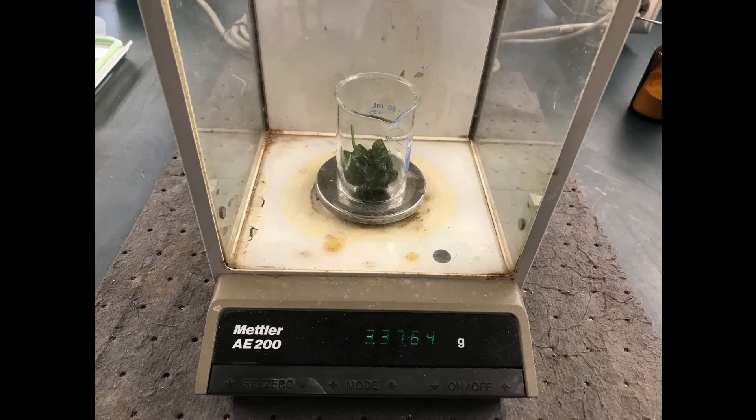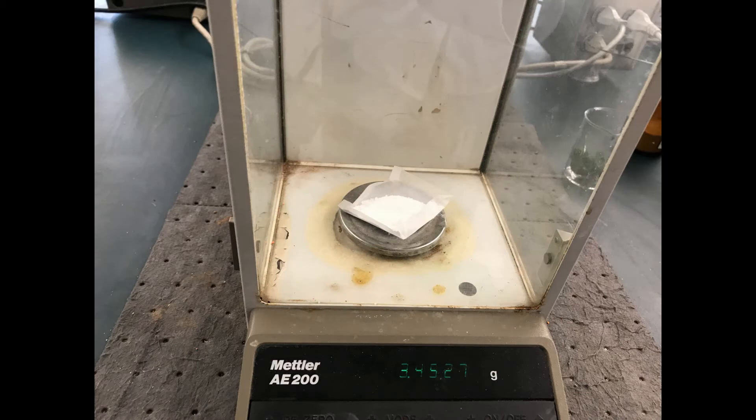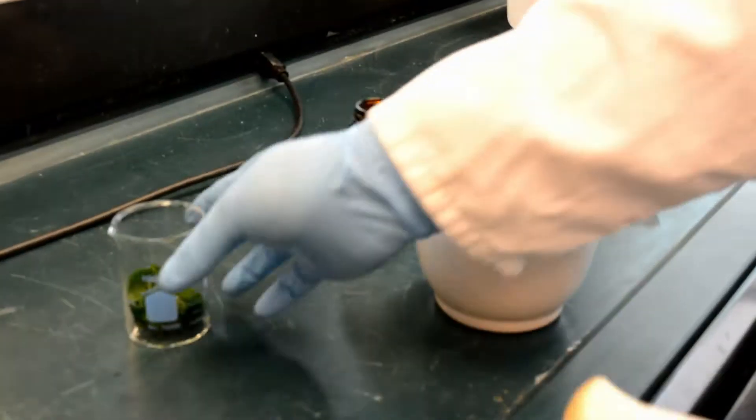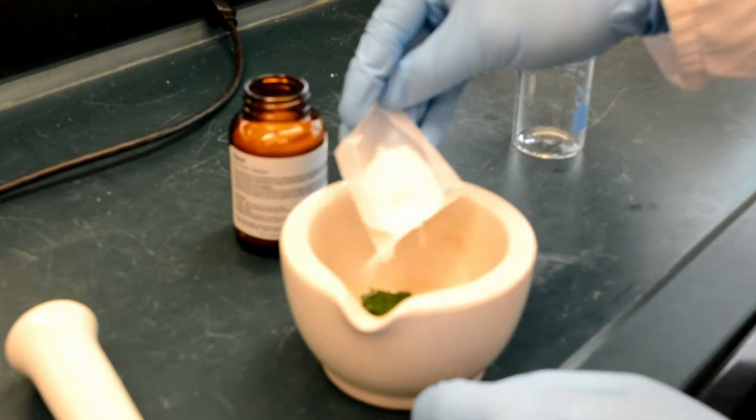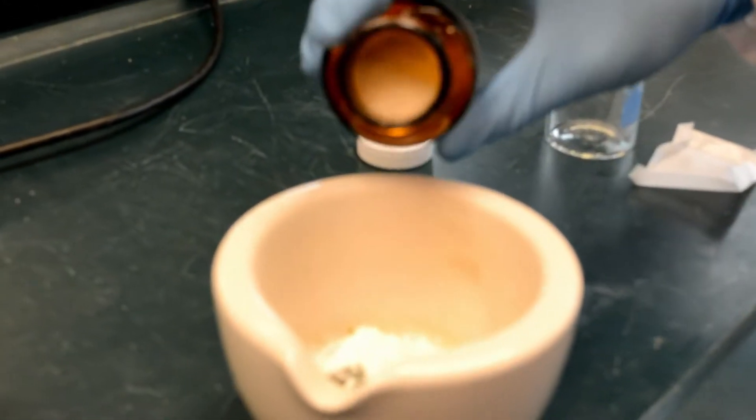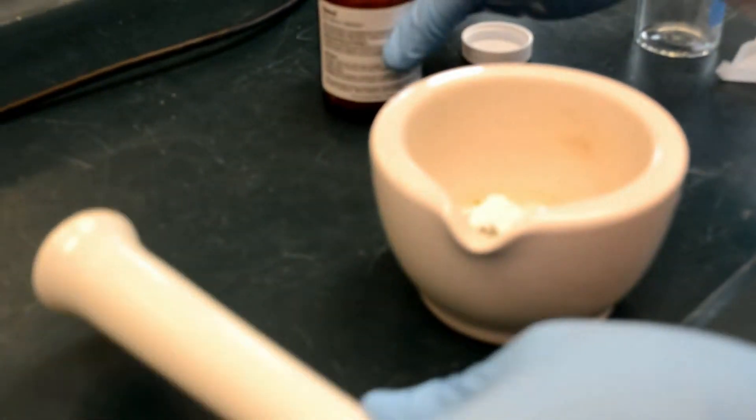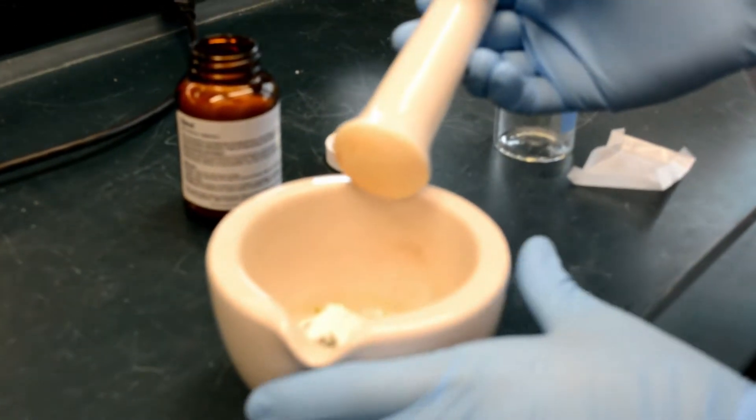Weigh about 3 grams of frozen spinach and 3 grams of magnesium sulfate. Add the spinach, magnesium sulfate, and a pinch of sand to the mortar and crush the mixture for about 5 minutes using the pestle.